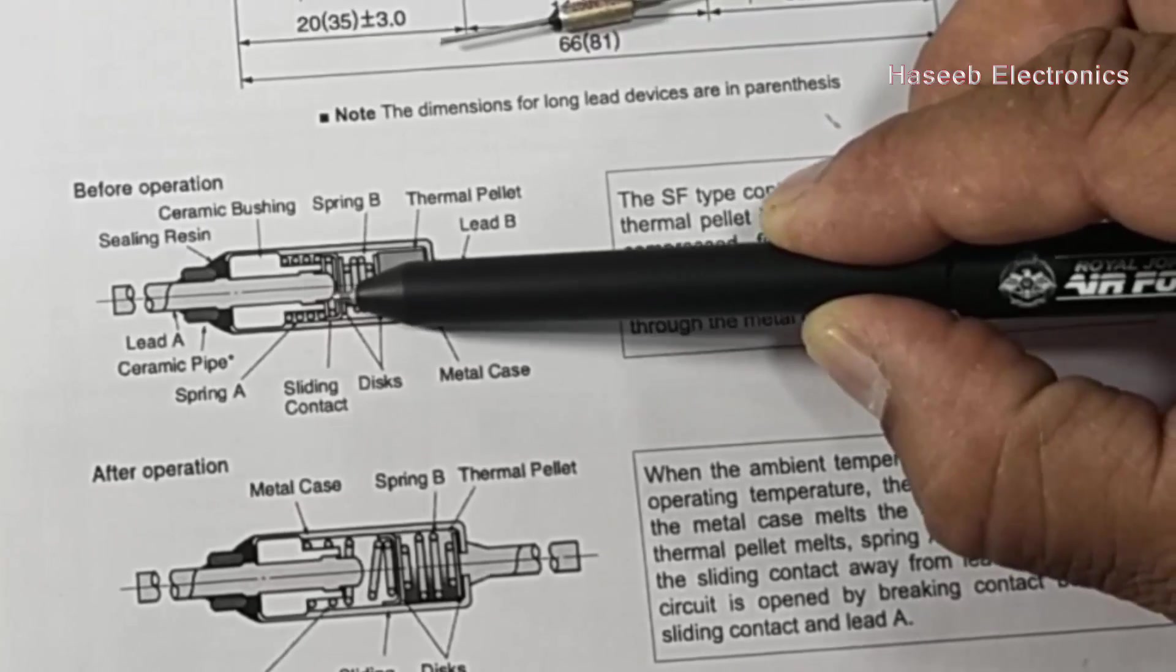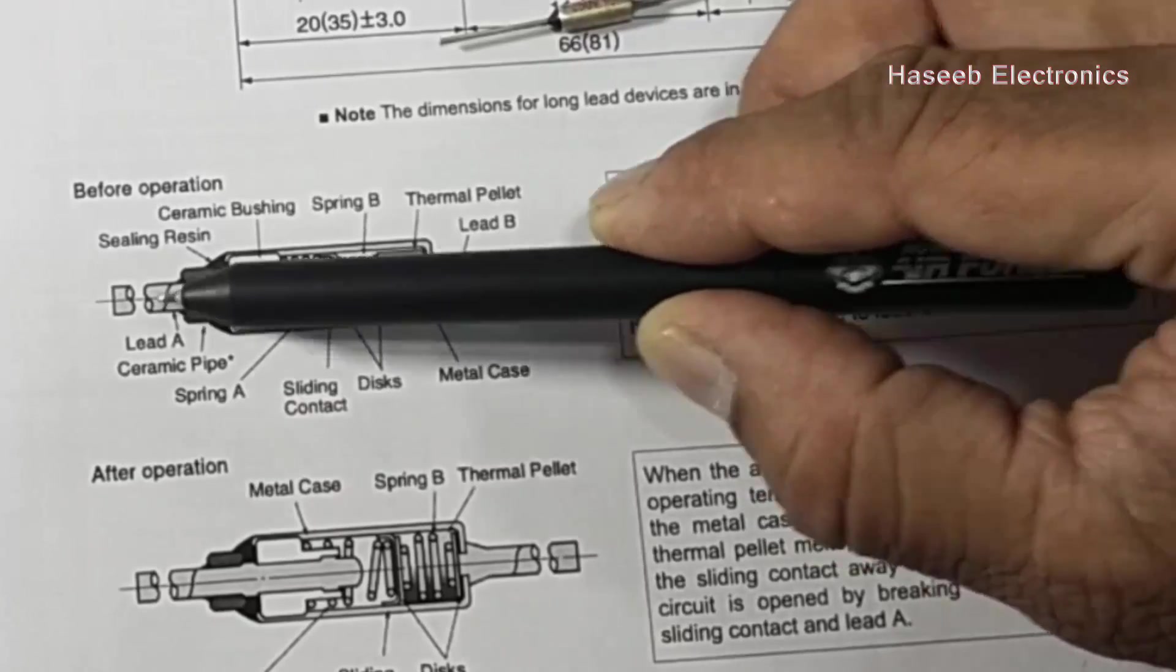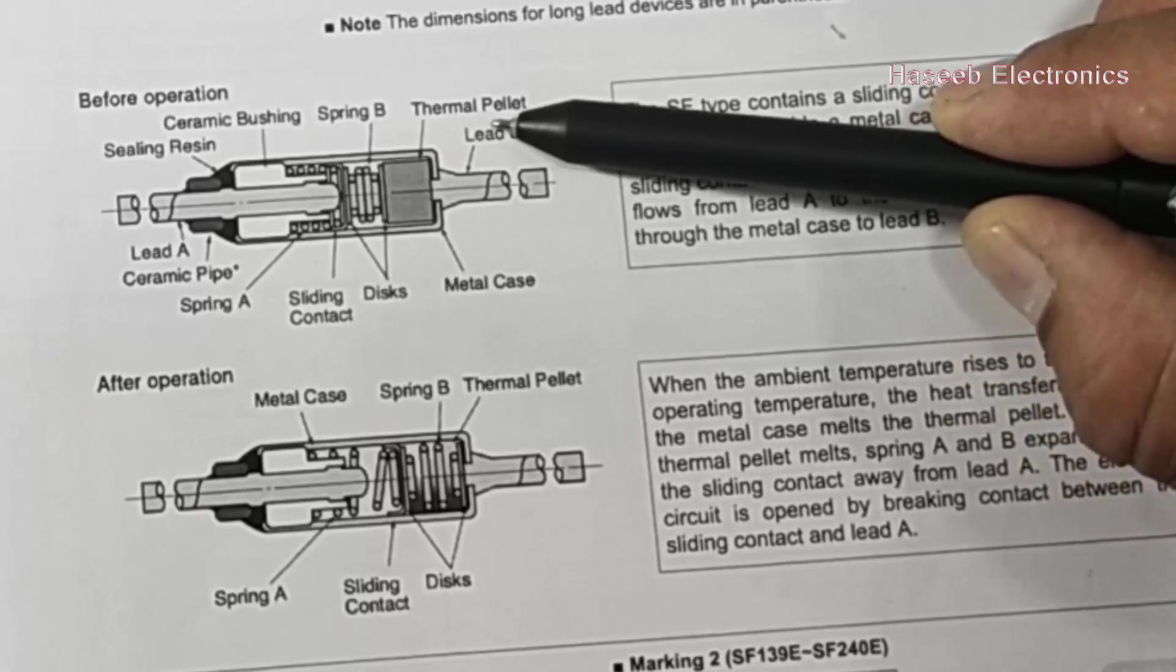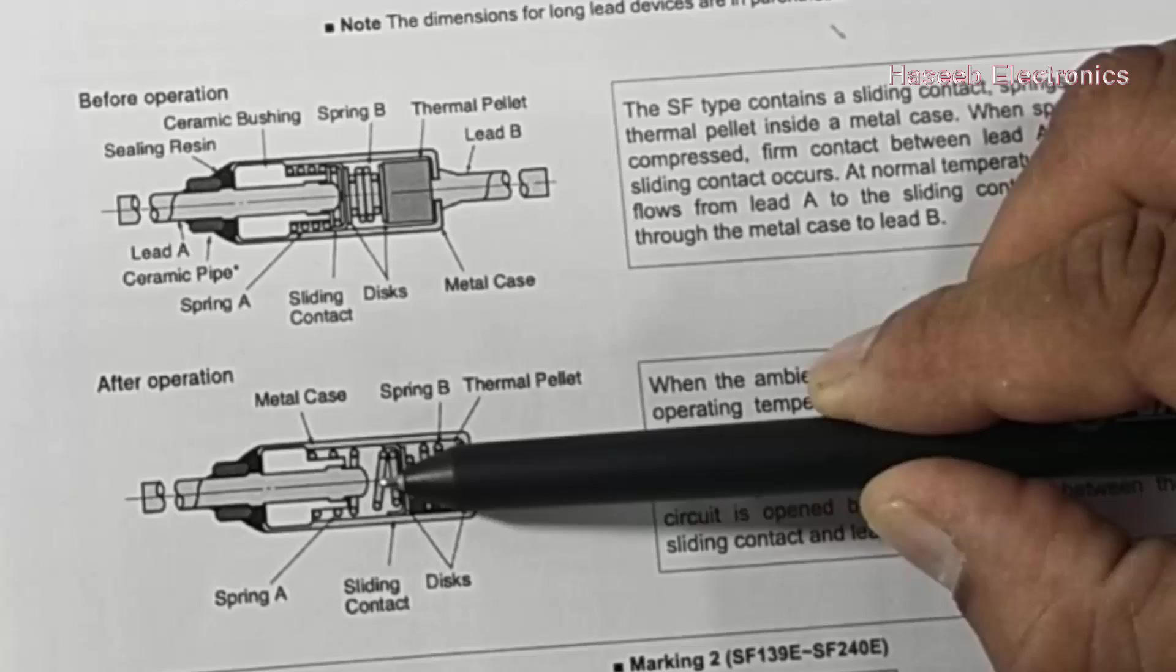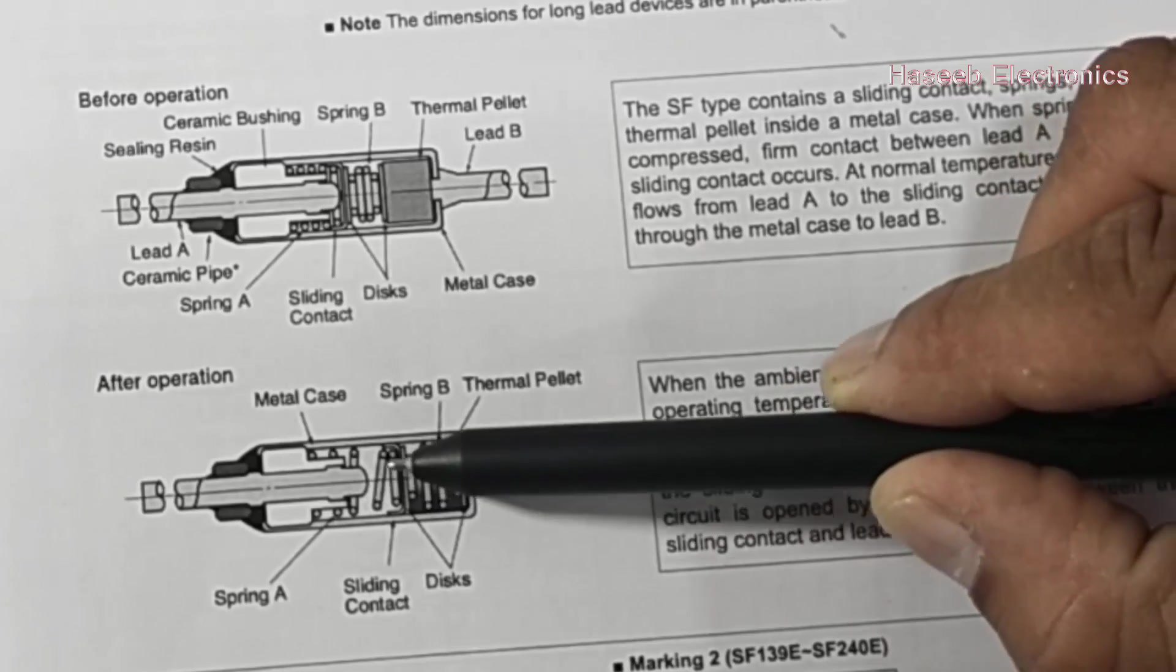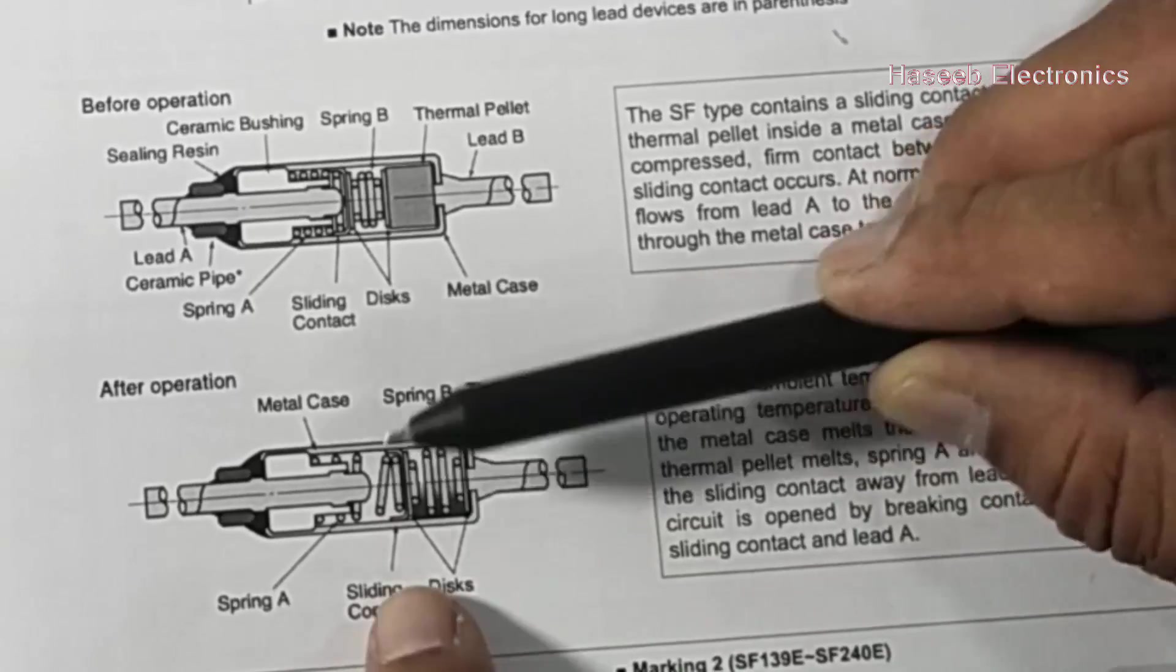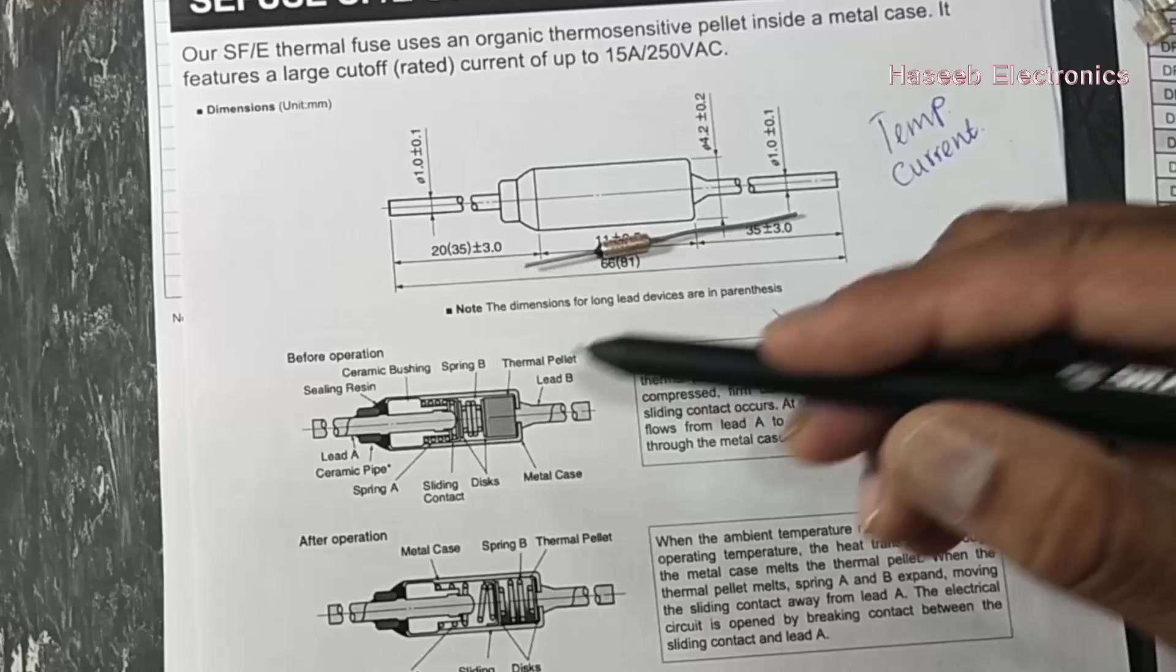Through this spring to the contact, the sliding contact and the outside. But now when this thermal pellet diffuses, it will pull back the spring. When the spring is away, it will make a space between the contact and the disk, so the circuit will open. If the rated current is achieved - that is 10 ampere, 250 volt - it will heat up and blow away.